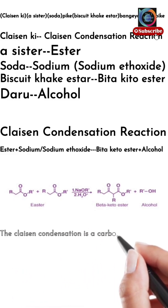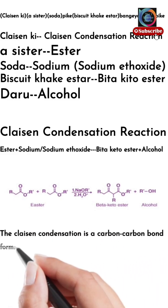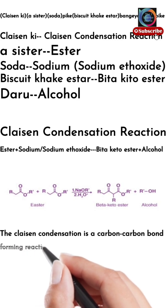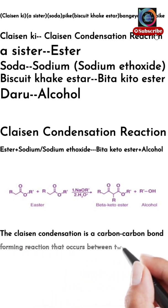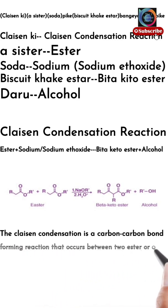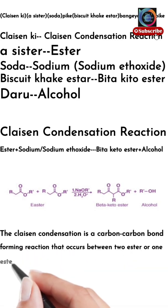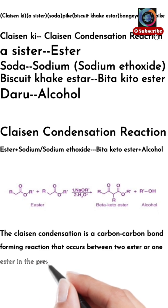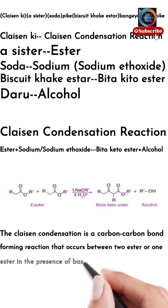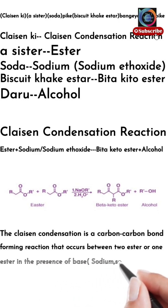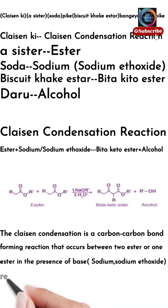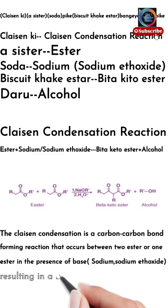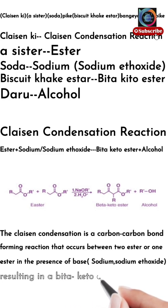This is our nice lecture representation of Claisen Condensation Reactions. We can also write it like this: the Claisen Condensation is a carbon-carbon bond forming reaction that occurs between two esters, or one ester, in the presence of a base — that is sodium ethoxide or sodium — resulting in a beta-keto ester and alcohol.